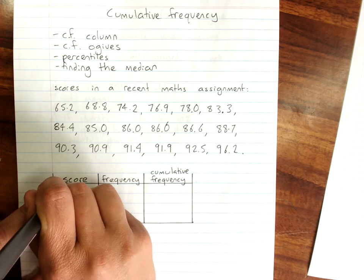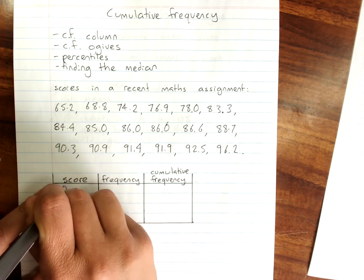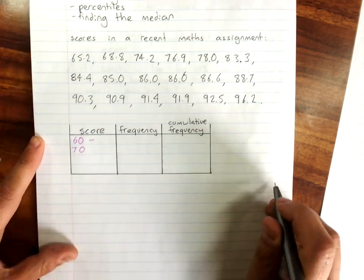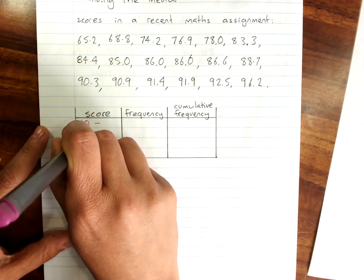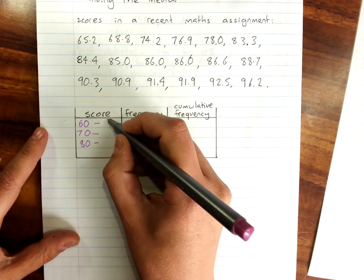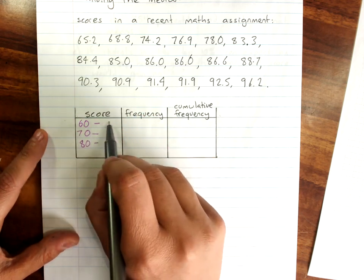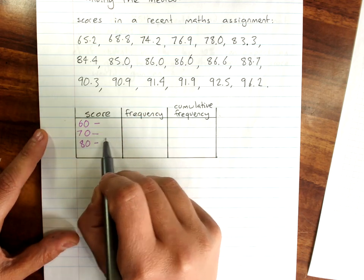So our scores are from 60 up to 70, up to 80. You'll see I'm using the convention where I don't say this is less than 70. We just assume 60 to less than 70, 70 to less than 80.